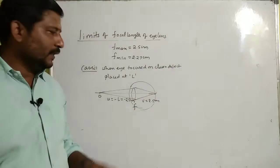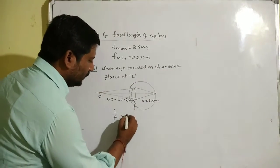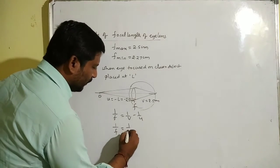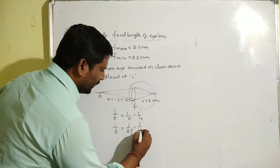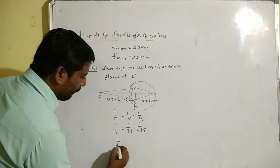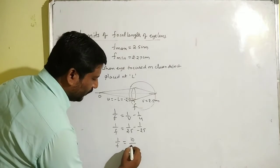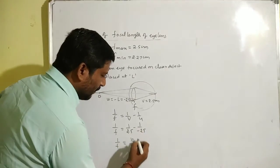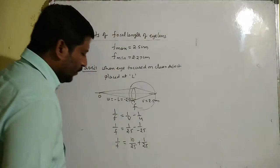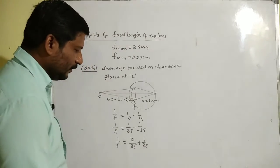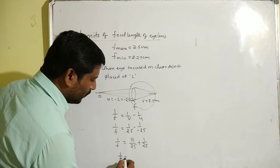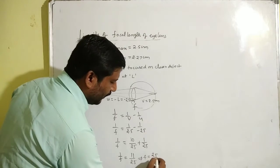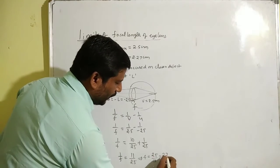Let us find the focal length of the eye lens using the lens formula: 1/f = 1/v − 1/u. Therefore, 1/f = 1/2.5 − 1/(−25). Now, 1/2.5 can be written as 10/25, so 1/f = 10/25 + 1/25. Taking LCM as 25, we get 1/f = 11/25. Therefore, f = 25/11 which equals 2.27 cm.